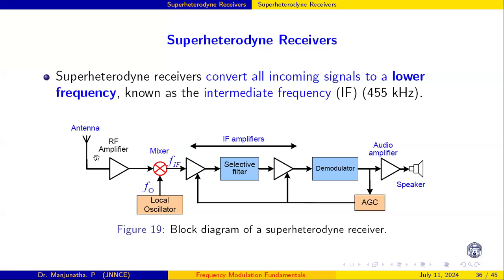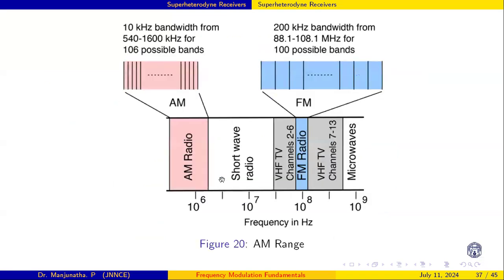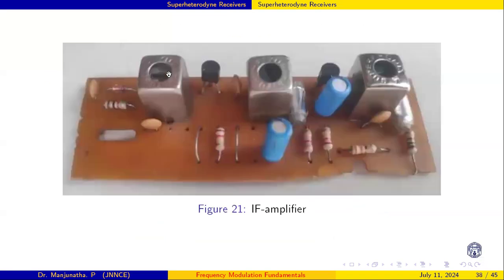This is why the superheterodyne receiver is very important. The antenna and RF amplifier have to handle all such frequencies. The antenna simply picks up the signal and amplifies it. Tuning — selecting which channel we want — is done by the local oscillator. The IF stage contains tuned circuits: capacitors, inductors, and typically a three-stage IF amplifier.